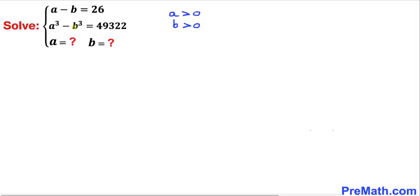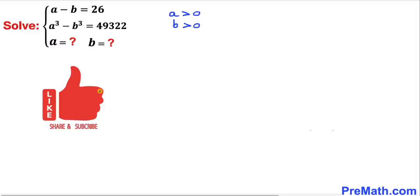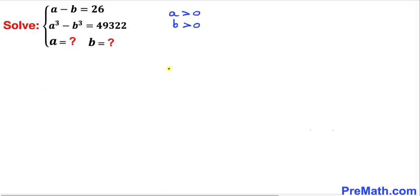Welcome to pre-math. In this video we are going to solve this given system of equations: a minus b equals 26, and a cubed minus b cubed equals 49,322. We are going to solve for a and b, keeping in mind that a and b are greater than 0. Please don't forget to give a thumbs up and subscribe. Let's go ahead and get started with the solution.